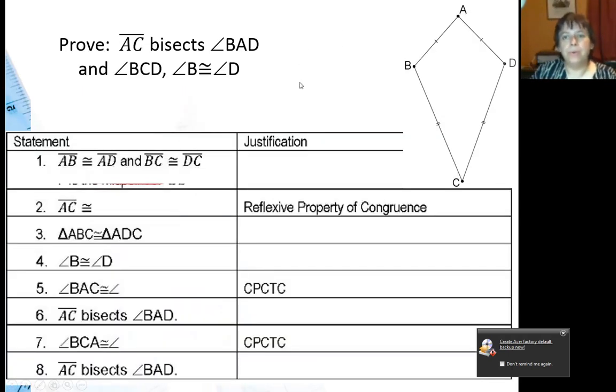So we're going to prove a couple of things, that angle B and angle D will be congruent in the kite. See how this is the angle between the non-congruent sides, and so is that one. Those two angles will always be congruent. And I'm also going to prove that AC, if I connect the other two angles with the diagonal, that that will cut the kite in half. It's going to bisect angle BAD and BCD.